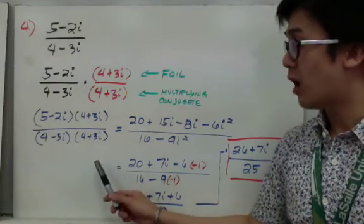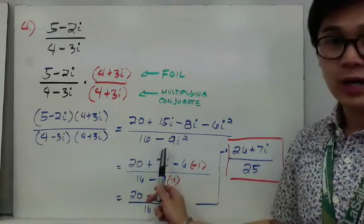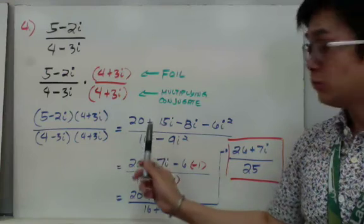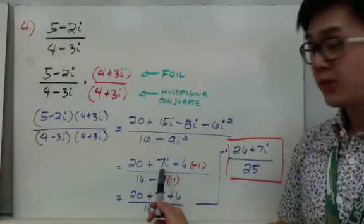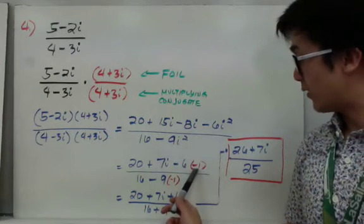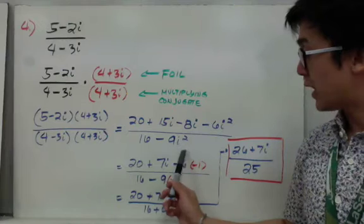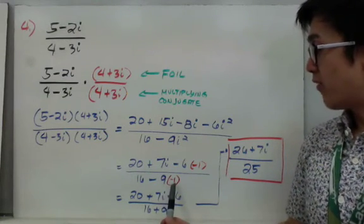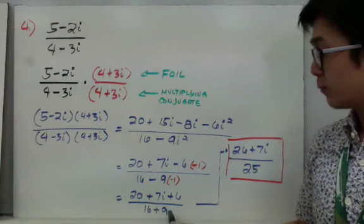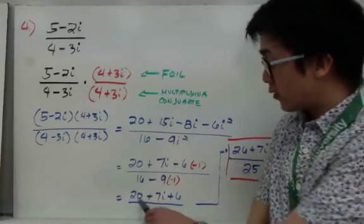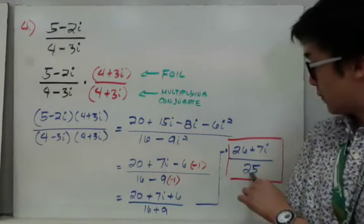For the denominator using the shortcut: 4 times 4 is 16, and negative 3i times positive 3i is negative 9i squared. Simplifying the numerator by combining like terms: 15i minus 8i gives positive 7i, and changing i squared to negative 1 makes negative 6i squared become positive 6. The denominator's i squared also changes to negative 1, so we have 20 plus 7i plus 6 all over 16 plus 9. Combining like terms: 20 plus 6 is 26, and 16 plus 9 is 25.